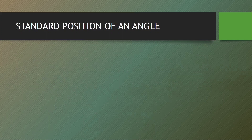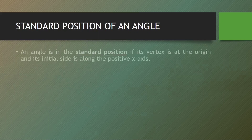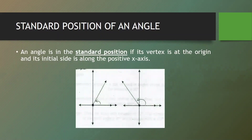Next, we have the standard position of an angle. An angle is said to be in standard position if its vertex is at the origin and its initial side is along the positive x-axis. This is the illustration of an angle in standard position — the initial side is along the positive x-axis and the vertex is at the origin.